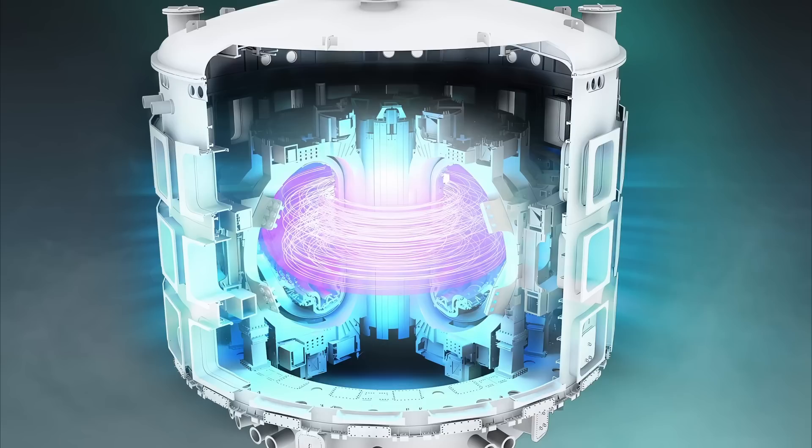Electrons in plasma screen the Coulomb barrier, effectively reducing the energy needed for tunneling. However, accurately measuring the degree of screening is challenging, leading to uncertainties in fusion rate calculations.